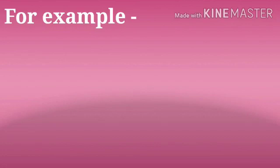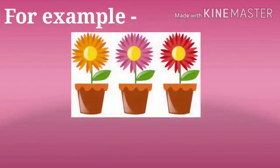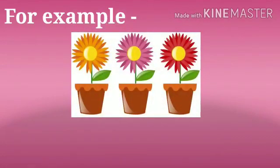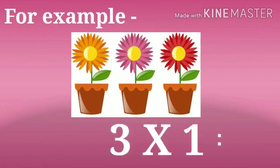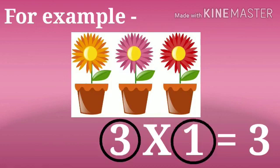For example, there are three flower pots and each pot contains one flower in it. How many flowers are there all together? Three multiplied by one is equal to three. So here we multiplied the number three by one and we get the answer as three, that is the number itself.